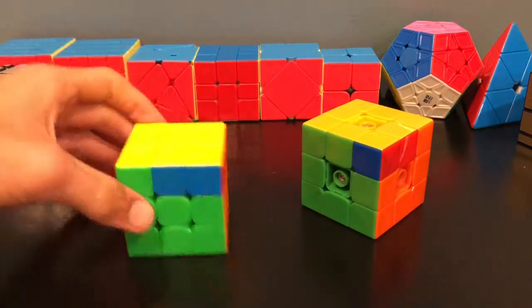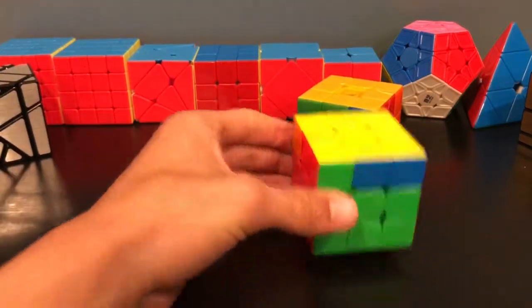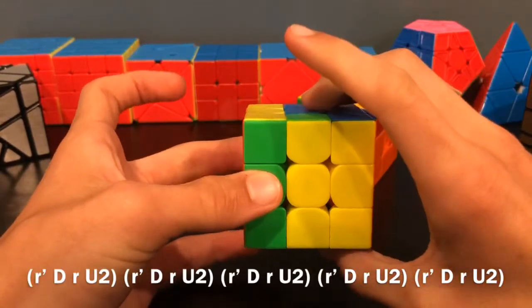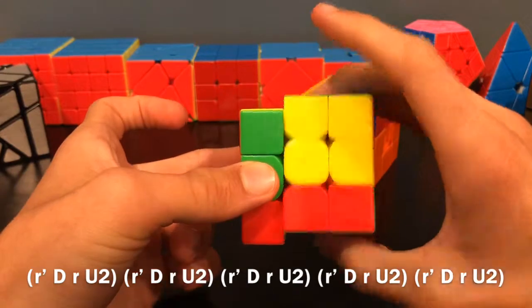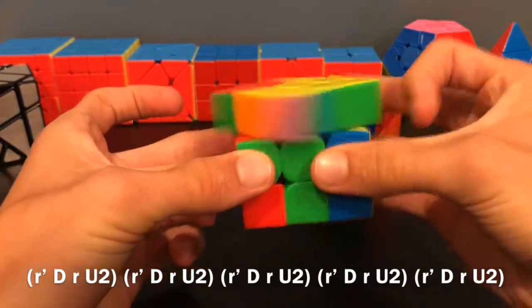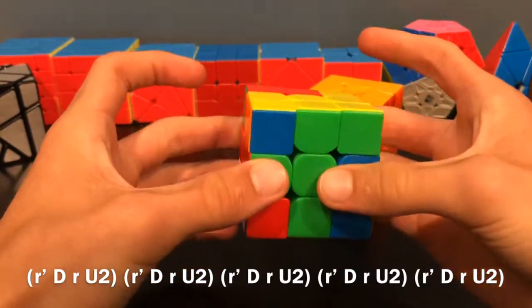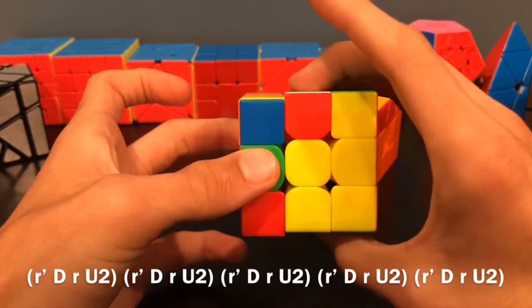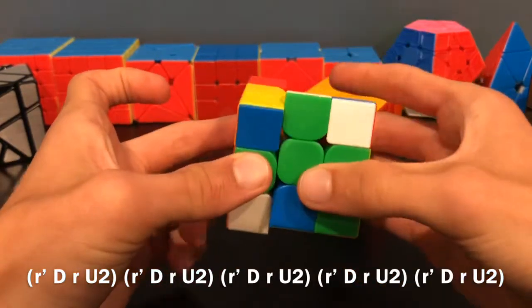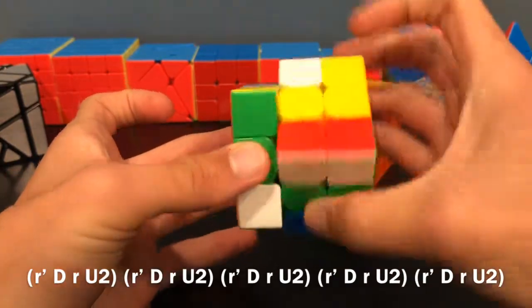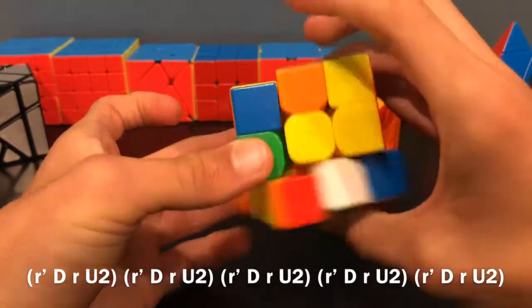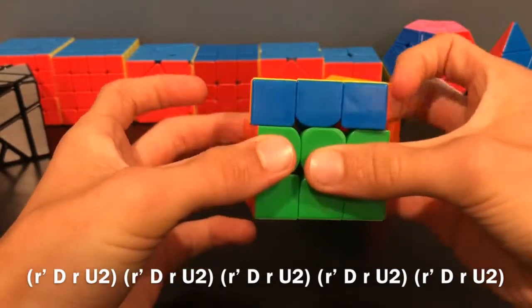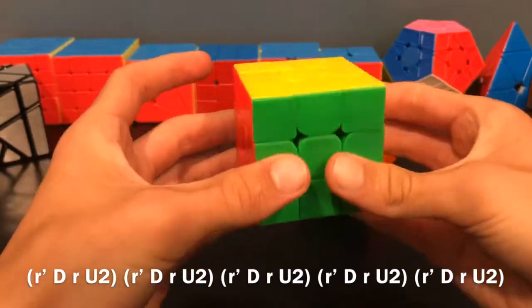For Na, when the dot's on the left, this would be the algorithm: R wide prime D R wide U2. For those five moves, you're going to repeat five times. One group, second time, third time, fourth time, fifth time, and then just fix the top layer.